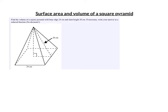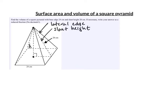Our pyramids are all right pyramids, meaning the height is perpendicular to the floor. There is some vocabulary you need: the height of the pyramid is the distance from the center of the square base up to the top. The slant height is indicated by the 20 in the picture, and the lateral edge is the edge going up to the apex — there are four of them.